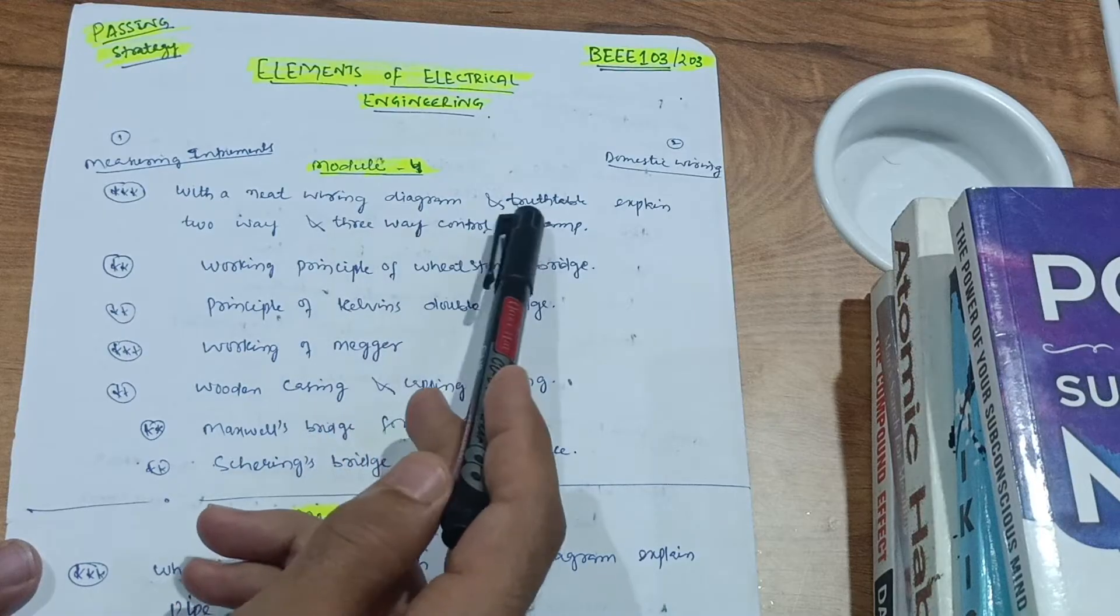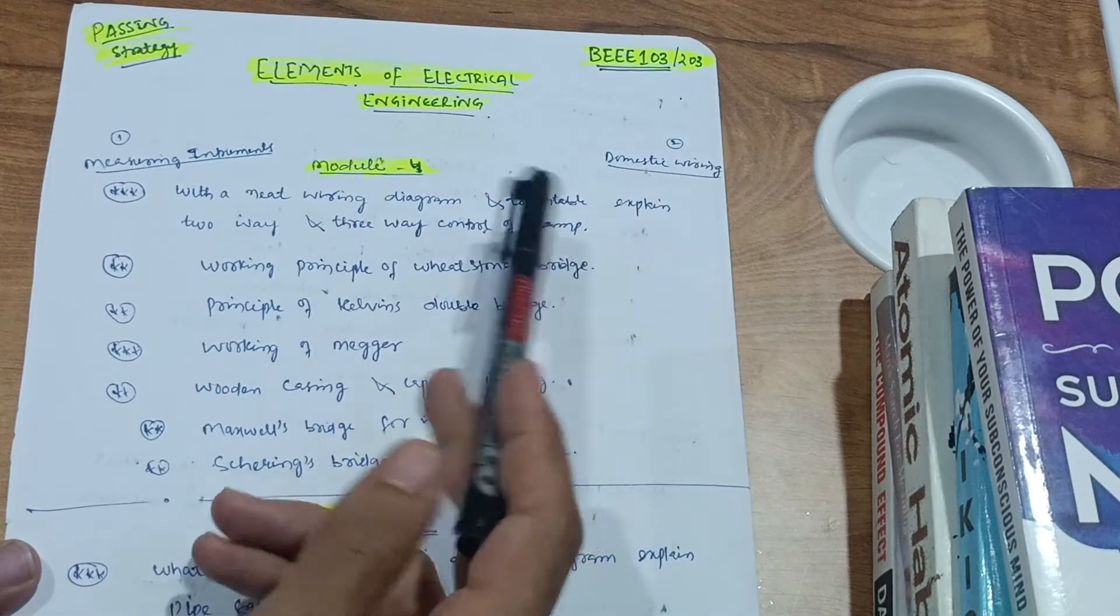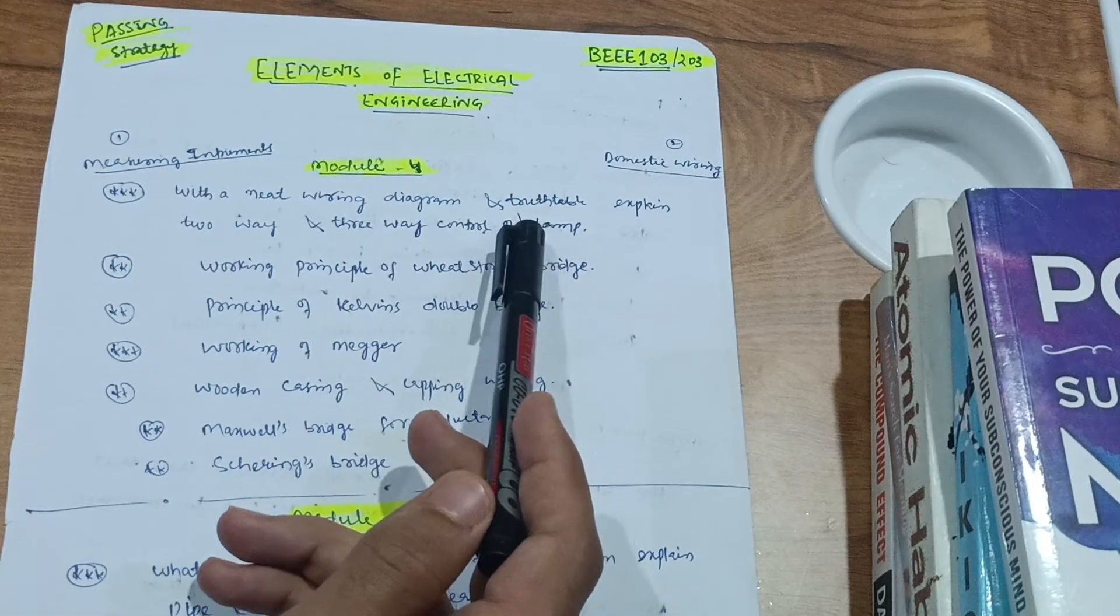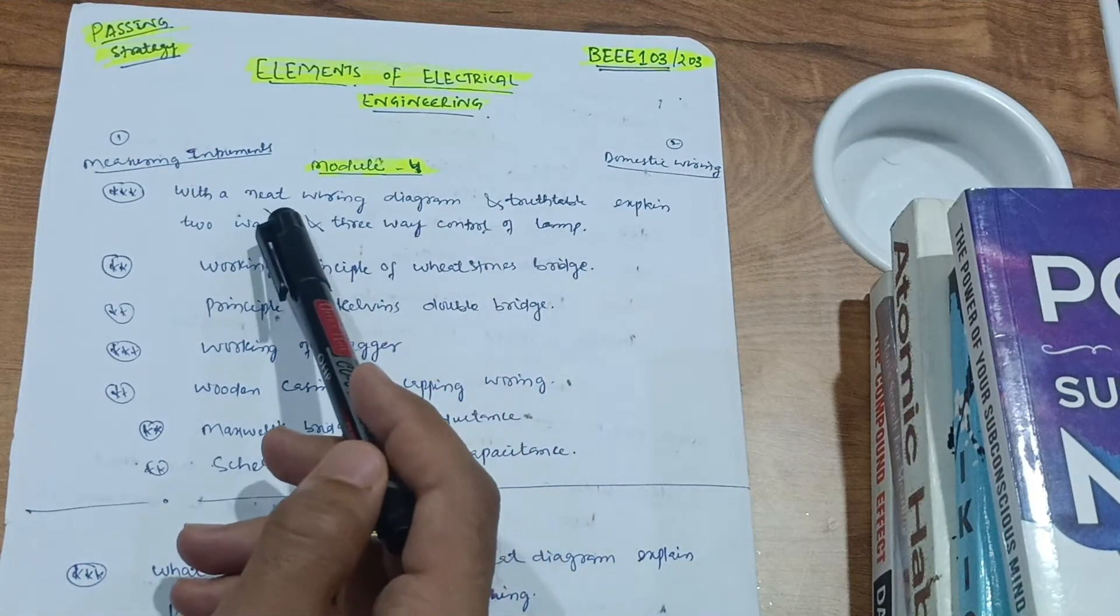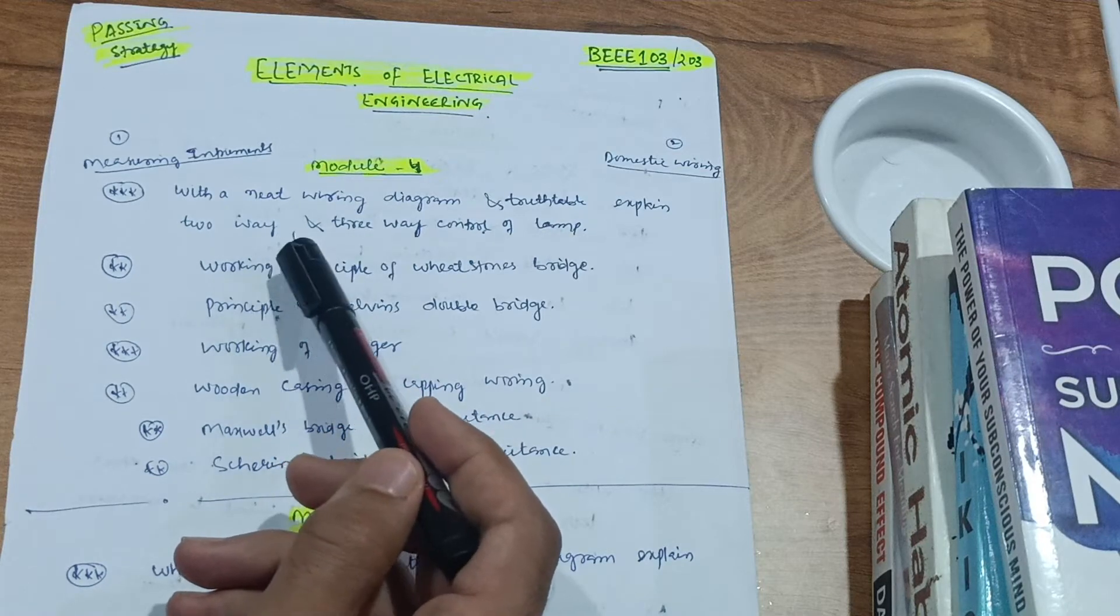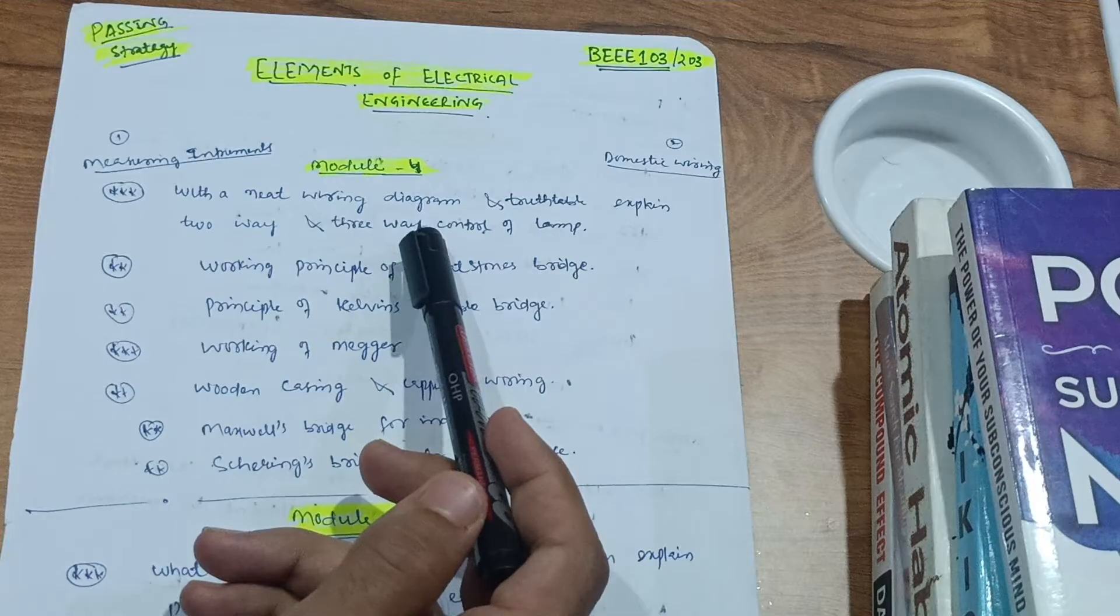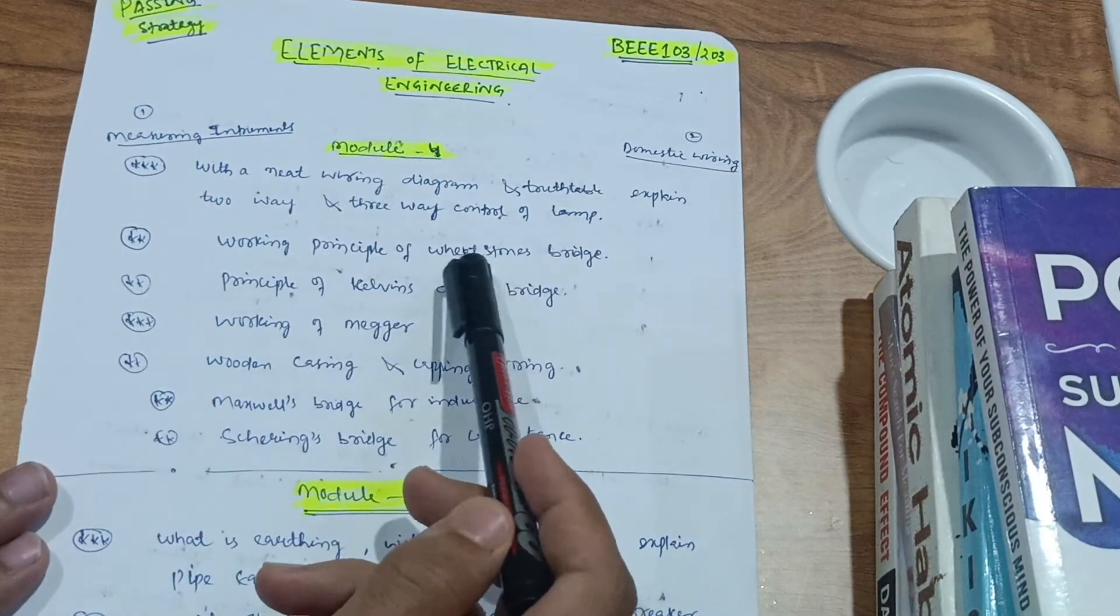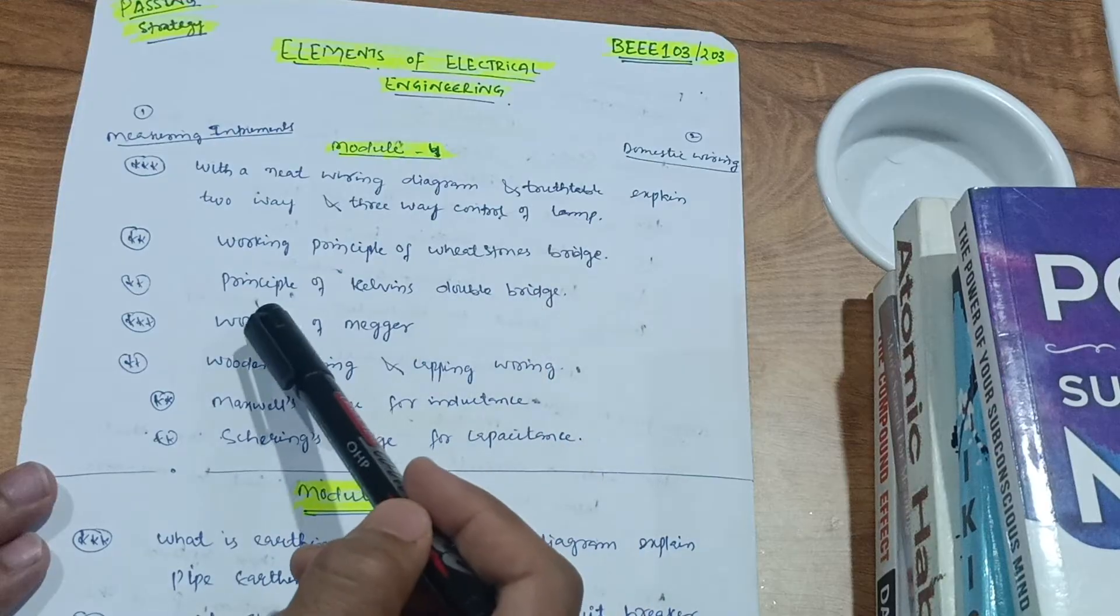With the neat wiring diagram and truth table, explain two-way and three-way control of lamp. They will definitely ask one among them. With the neat sketch and truth table, explain two-way switch. Sometimes they may give three-way control of the lamp. Next one is the working principle of Wheatstone bridge.